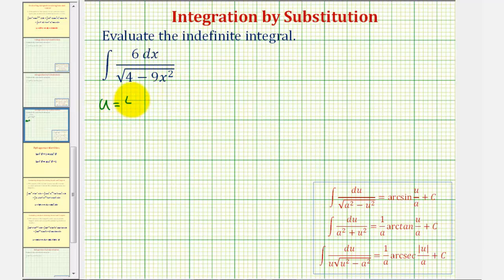If we let u equal 4 minus 9x squared, notice that du would equal negative 18x dx. Notice how the integrand does not contain an extra factor of x, and therefore this u substitution won't work.